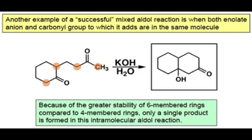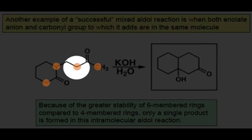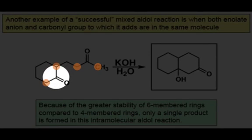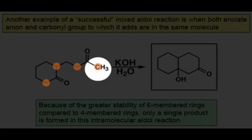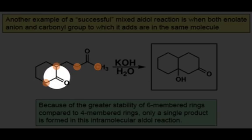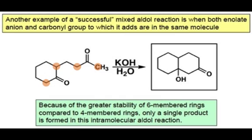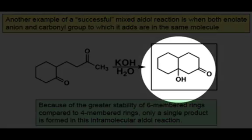Now using our knowledge of the stability of cyclic structures, we should be able to predict the product that is formed. If an enolate is formed at this alpha carbon and attacks this carbonyl, a four-membered ring will result. If the methyl group is deprotonated, forms an enolate, and attacks this carbonyl, a six-membered ring will result. We know that a six-membered ring is more stable than a four-membered ring, and that is indeed the product that is formed.